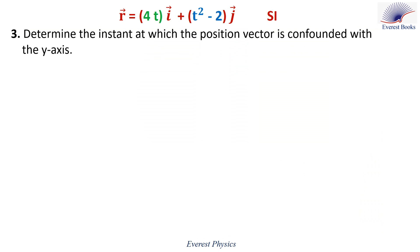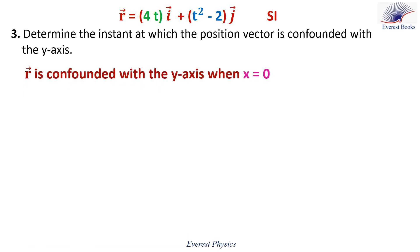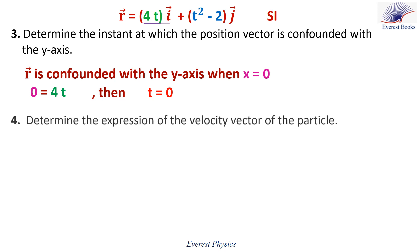Number three: determine the instant at which the position vector is confounded with the y-axis. The position vector is confounded with the y-axis when x equals zero. Since x equals 4t, setting 4t equal to zero gives t equals zero. So R is confounded with the y-axis when t equals 0.